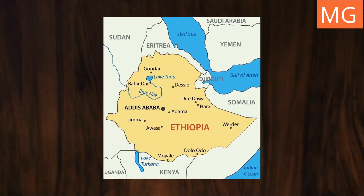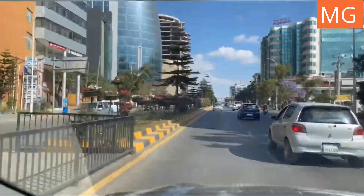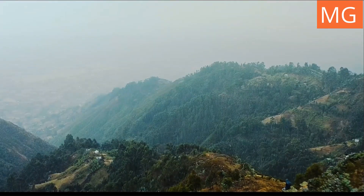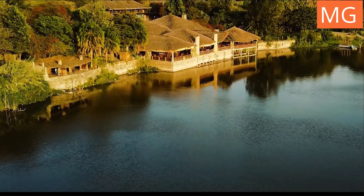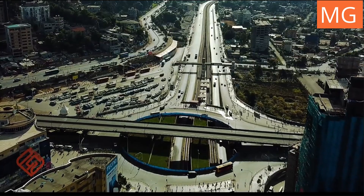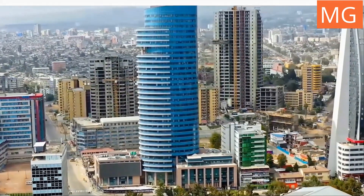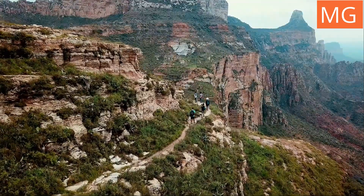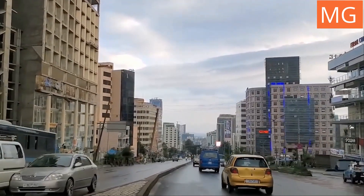Addis Ababa is a buzzing hub of economic, social, and political activity, and home to such notable offices as the African Union and the United Nations Economic Commission for Africa. The government of Ethiopia is structured in the form of a federal parliamentary republic, whereby the prime minister is the head of government, executive power is exercised by the government, and legislative power is vested in the parliament. The current prime minister is Abiy Ahmed Ali, and the president is Sahle-Work Zewde.